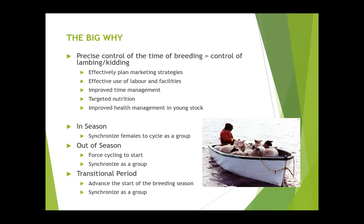Also targeted nutrition — tighter groups that are in the same stage of pregnancy at the same time are easier to feed than groups that are spread out over months of pregnancy. If you have ewes in a feeding group that are 30 days pregnant and ewes that are about to lamb, that's very hard to feed them appropriately as a group, especially as the industry moves into more prolific breeds that require better nutritional management around lambing time. And then also improving health in young stock — tight groups of lambs being born in short periods of time helps prevent disease situations where older lambs spread disease to younger lambs because of a wide age spread.